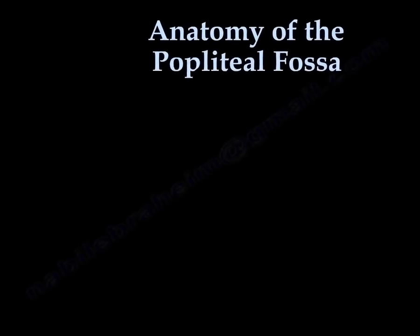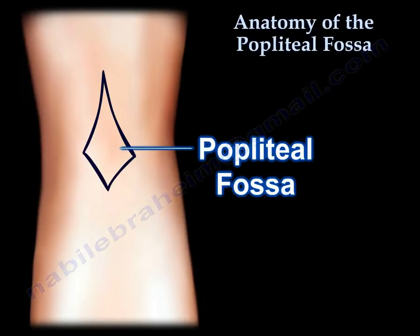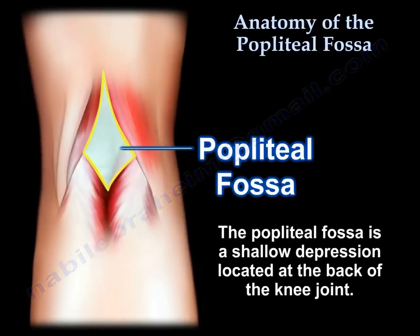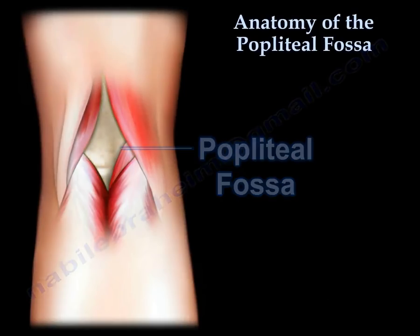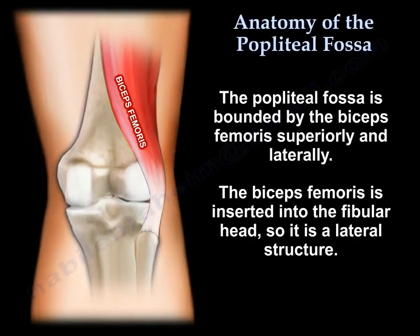The popliteal fossa is a shallow depression located at the back of the knee joint. It is bounded superiorly and laterally by the biceps femoris, which is inserted into the fibular head.